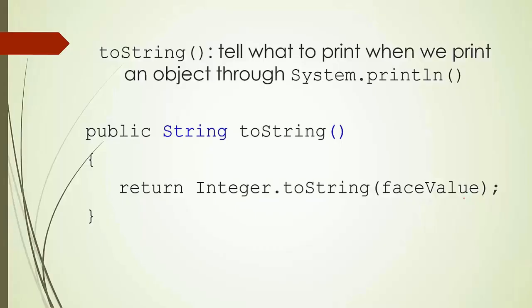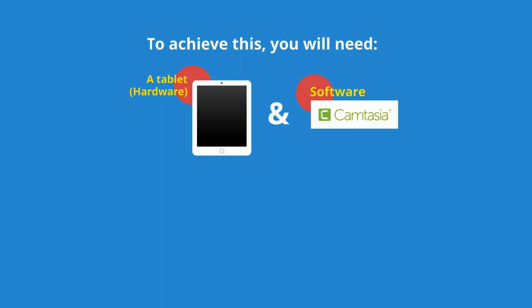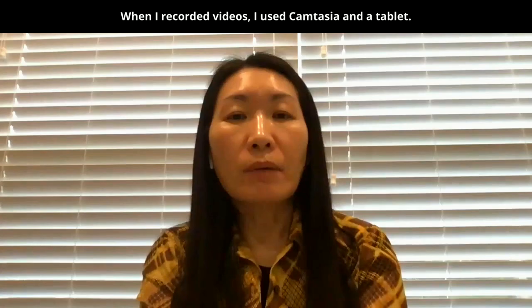Let's see how it will be shown on your video screen. The return type of toString must be String — no parameter is needed. Int.toString(faceValue) returns a String representing the face value, ensuring the type of the value returned matches the return type of the method. As illustrated, you need a tablet and suitable software. Dr. Lui used Camtasia, but you can also consider other tools.